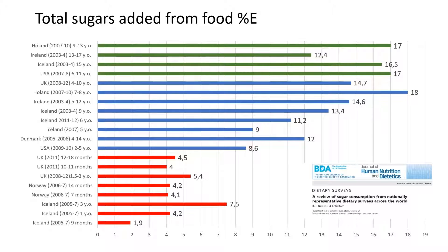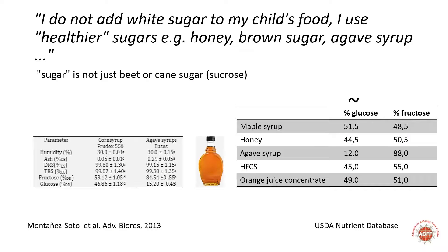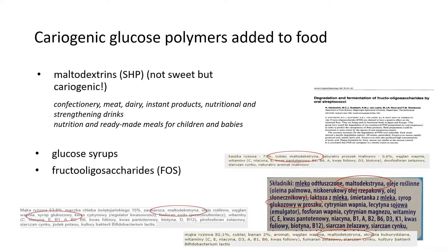Why, despite the knowledge about the harmfulness of sugar, is the consumption of sugar so high? First, many people believe that some sugars are less harmful — for example, brown sugar — and some are more harmful, such as white sugar or high fructose corn syrup. Secondly, they don't know that non-sweet sugars present in many baby foods, such as starch or maltodextrin, are also cariogenic.